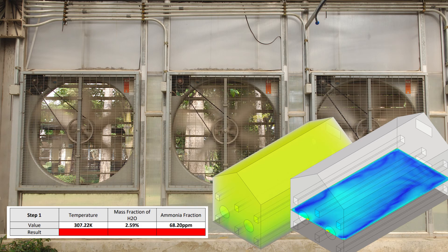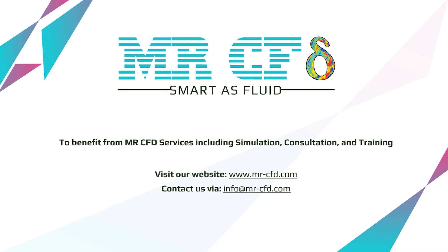Considering the objectives and limitations, we proposed to install the water-cooled air conditioner close to the ceiling. Thus, it would be possible to increase the velocity and benefit from natural convection as well. As a result, all targets were achieved. Importantly, the temperature contour illustrates how the air circulation significantly improved — all rows experienced similar conditions, and the plants were not in direct contact with high-speed airflow, preventing any probable damage.